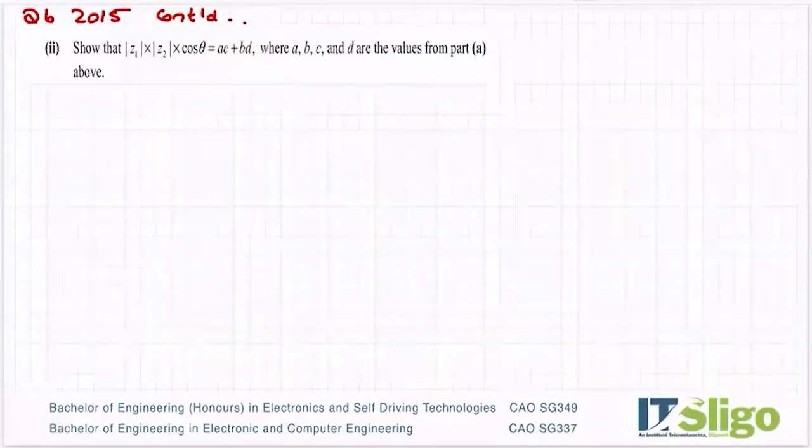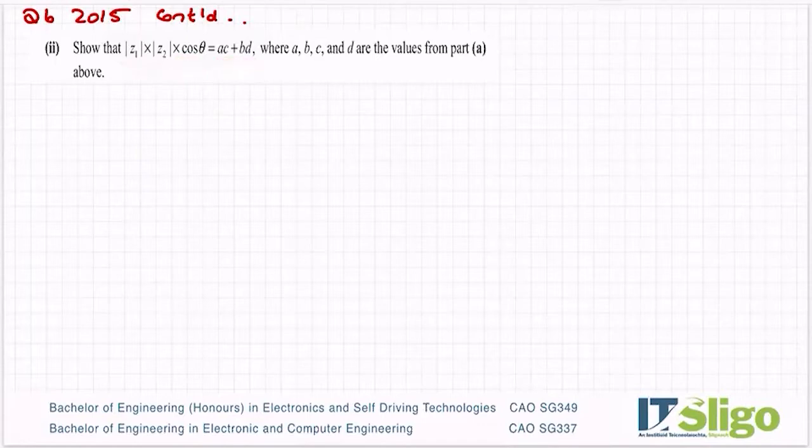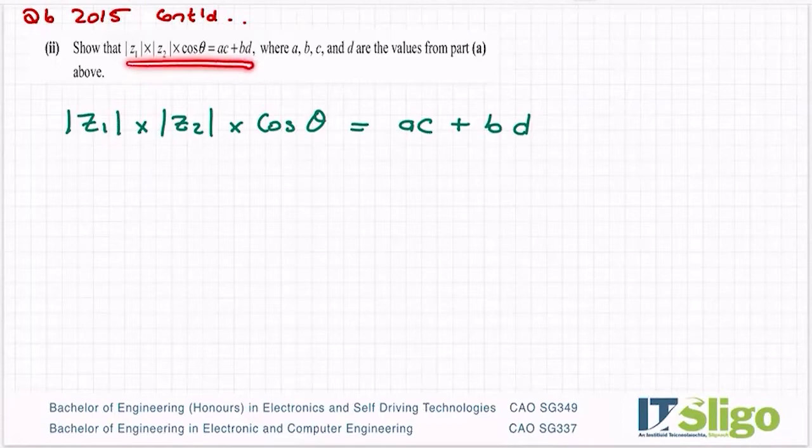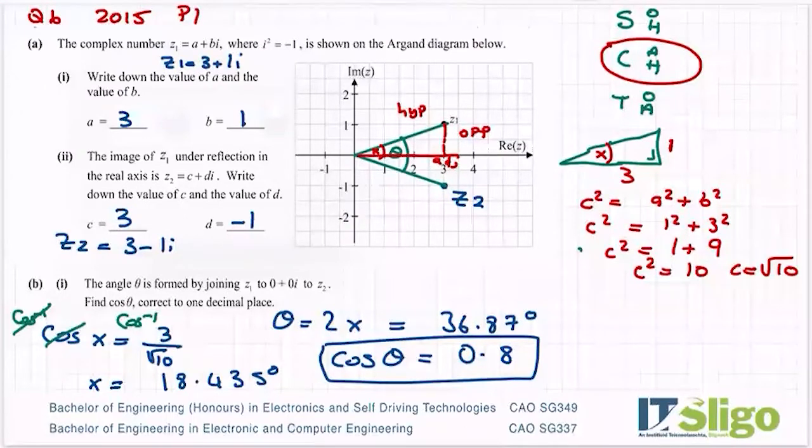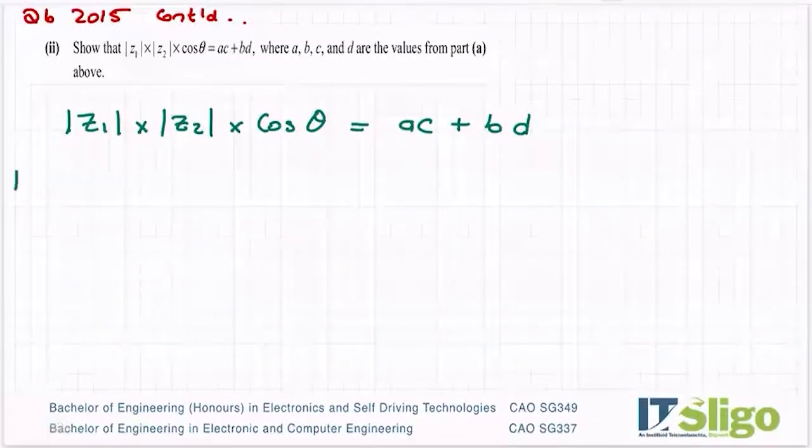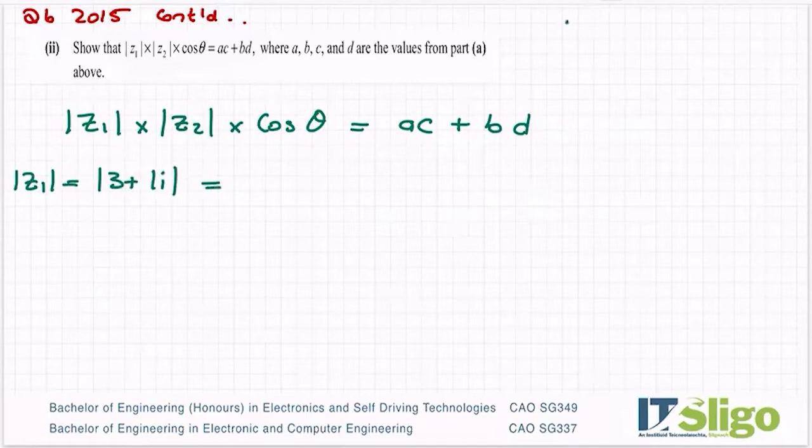Then the last part of that question said show that the modulus of z1 by the modulus of z2 by cos theta is equal to ac plus bd. Now I remember back at the time this and every year since this confuses students because it's not clear really what they're looking for, but my advice to you is take down what they've asked you to show and fill in the pieces and see where it brings you. So the modulus of z1 - z1 is 3 plus 1i - so the modulus of z1 is the modulus of 3 plus 1i which as you know the modulus of x plus yi is the square root of x squared plus y squared. So it's the square root of 3 squared plus 1 squared which is root 10.